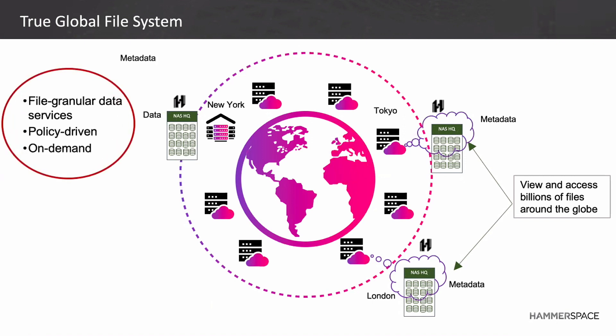We haven't replicated any files yet, but you need to replicate files to those locations. We have a combination of policy-driven services at a file granular level. In London, if they need 10,000 files for a project, you create a policy to pre-stage those files there. Tokyo might only need 2,000 files replicated to them. If a user accesses a file outside that policy, files can also be replicated on demand. This is all one system throughout — if a file is changed in Tokyo, it's reflected in London and New York. You're not limited to three locations — you can do six, eight, ten, twenty, etc.